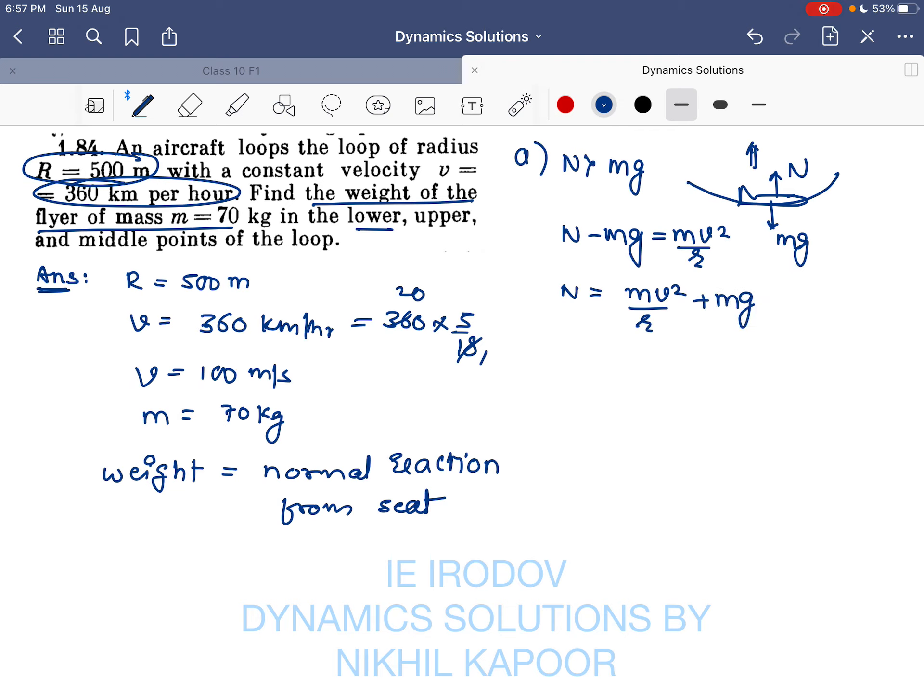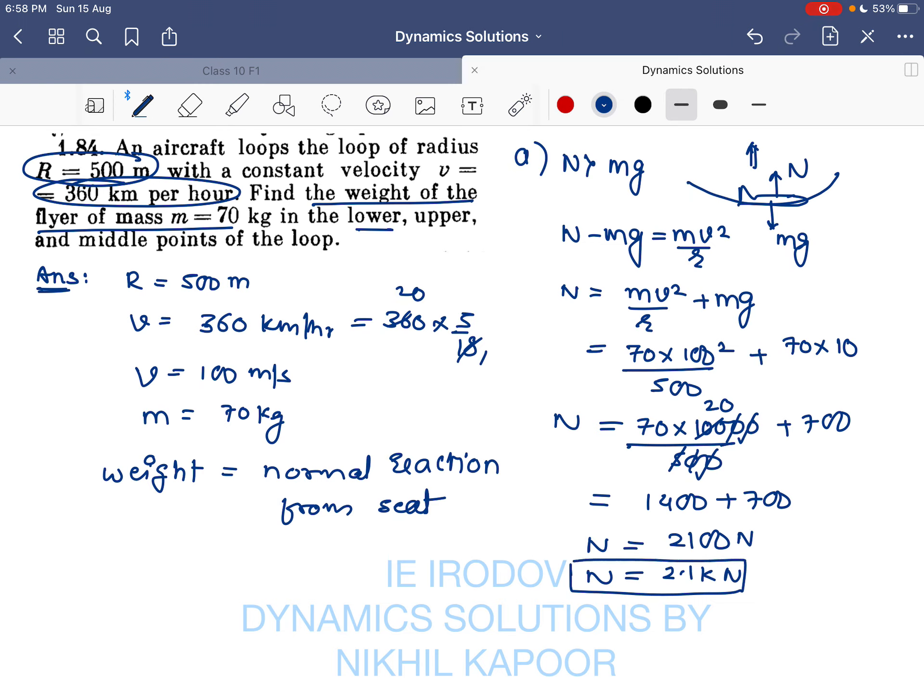So therefore the weight felt will be equal to mv² / r + mg. So m is 70 kg, the v is 100 square upon 500 meter, plus 70 into—for easy calculation I am taking g as 10, for accurate you can also take 9.8. So this will be 700 upon 500, these two zeros will get cancelled out, so it will be 1400 plus 700. So the normal reaction will be 2100 newton, so that would be 2.1 kilonewton. So that is the weight felt when the flyer is passing through the lower point.